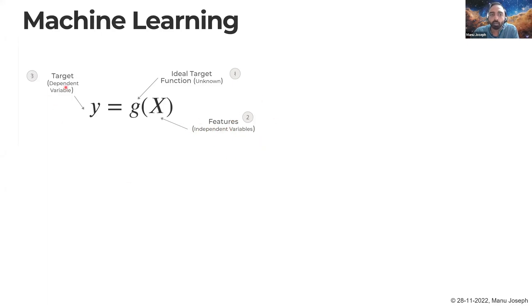And then you also have the target. You know what you want to predict. It is whether he churns or not, very simple as that. So now there is an ideal target function, let's call it g, which gives you that. You plug in this X to this function, the output is the target that you want.